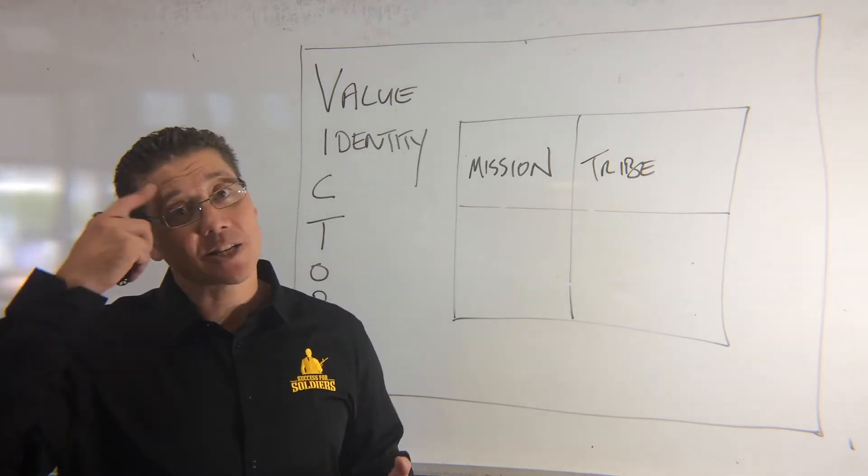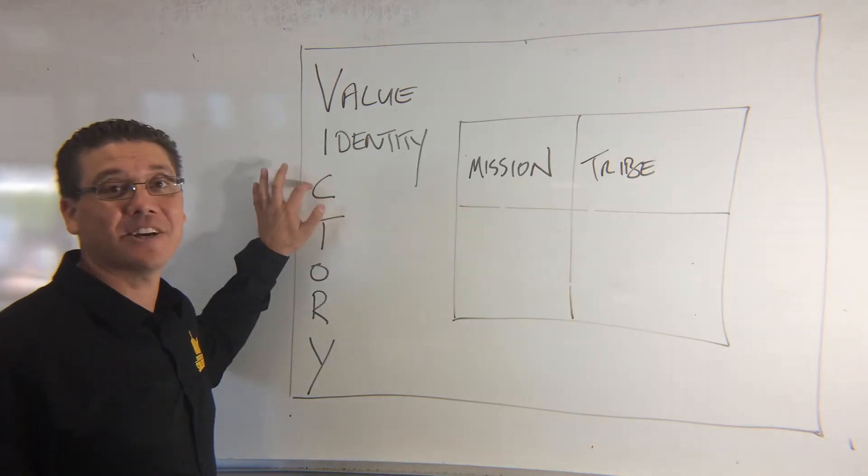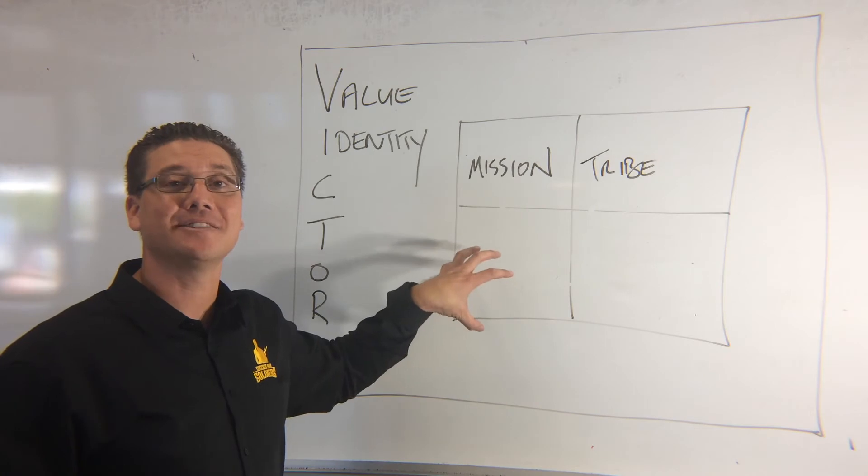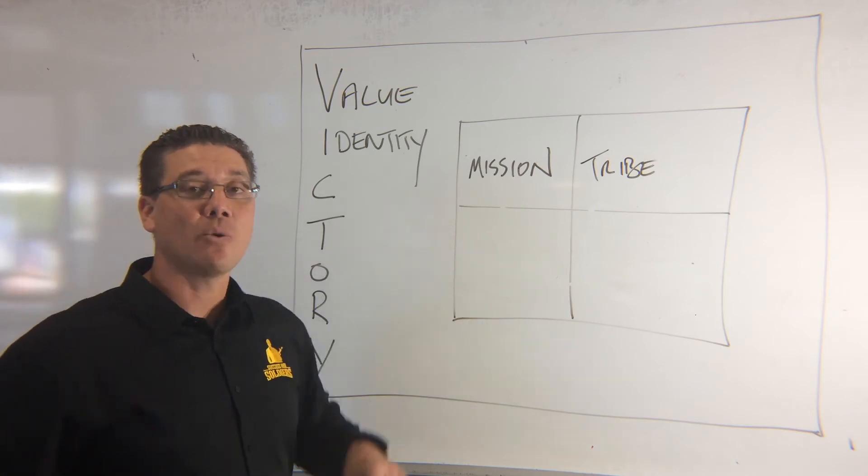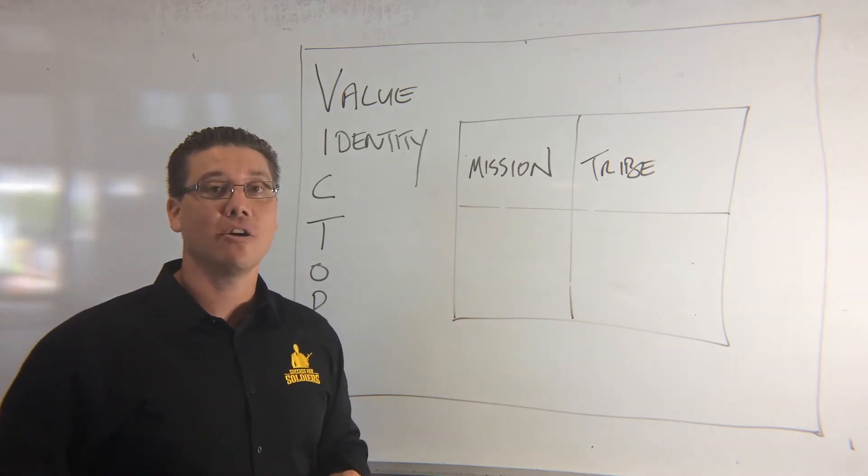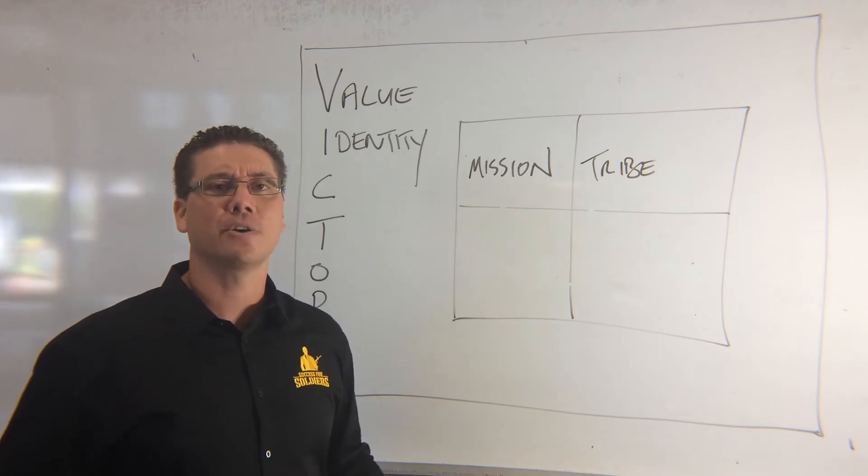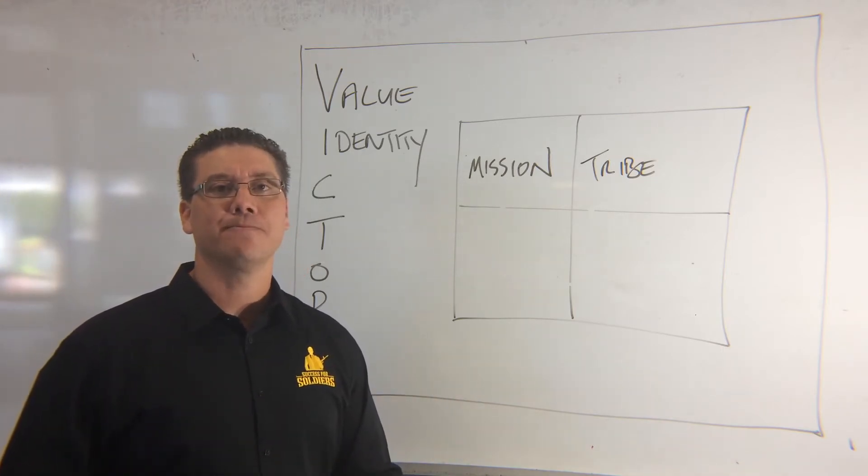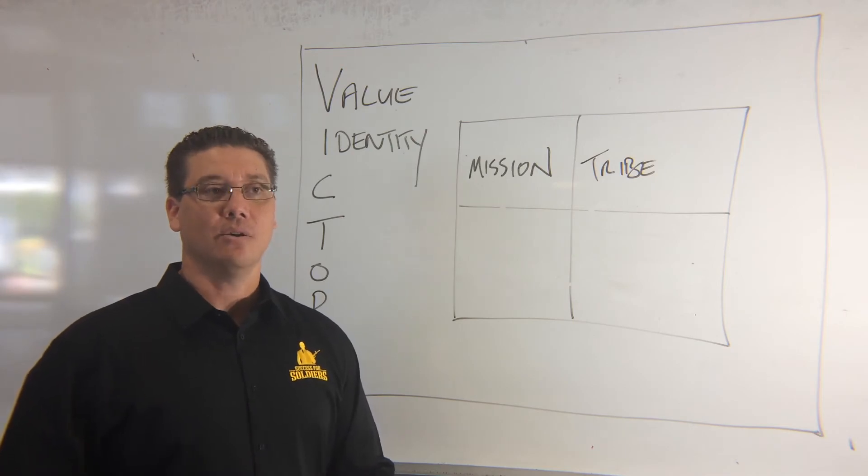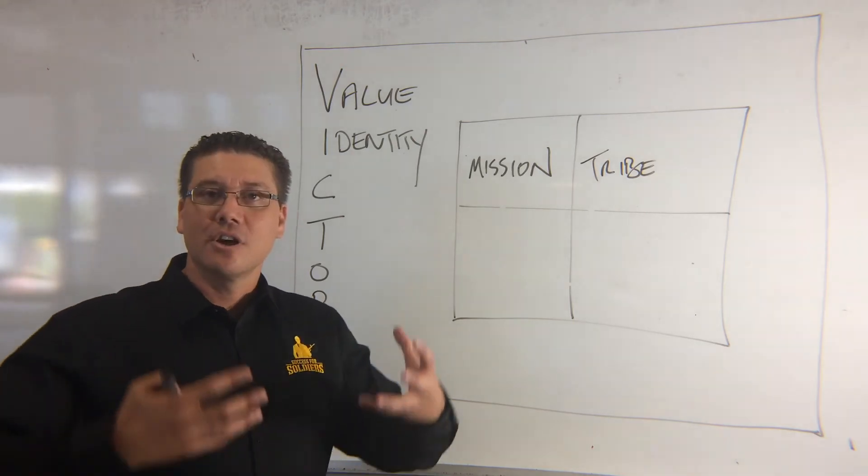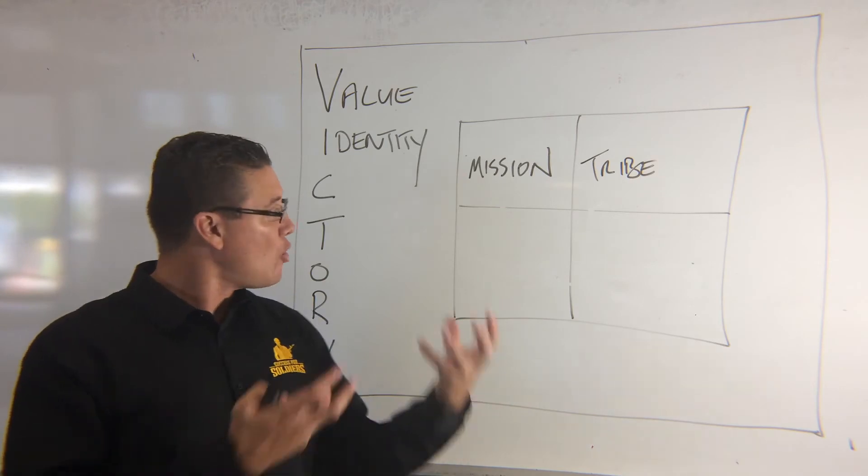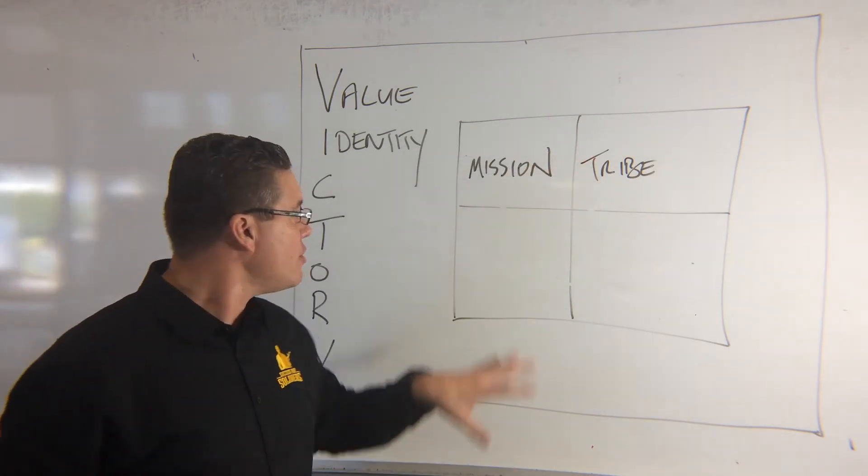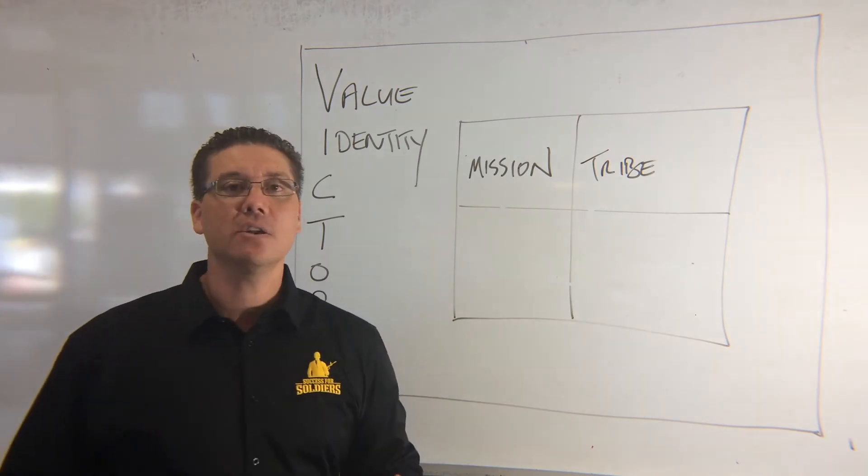But look what happens when there's a natural disaster and the armed forces turn up. There's an expectation of victory because now our tribe and our identity, we now have value in our communities. Which is why one of the strategies I learned really early on, which created a huge amount of conflict within my own veteran communities, was learning to become a businessman. Why? Because I've found that all of our skill sets that we have from our tribe, they have huge value here in the civilian world.